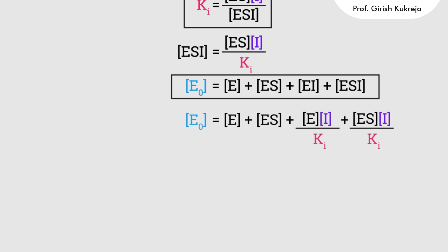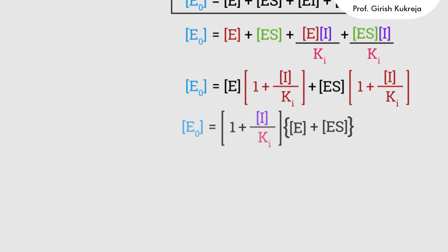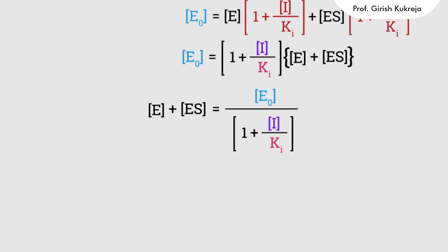Now, taking the term E common from the first two terms and ES from the other two, we have E × (1 + I/Ki) + ES × (1 + I/Ki). Taking (1 + I/Ki) common from these two terms, we have (1 + I/Ki) × (E + ES). From this, we have E + ES = E0 / (1 + I/Ki).